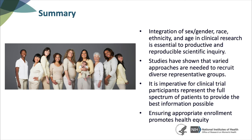The purpose of clinical research is to understand how the human body works and to apply that knowledge to improve health outcomes for everyone. For clinical research to be truly useful, it must reflect the populations affected by the diseases it intends to help. Given important biological differences by age and sex, and other differences by race and ethnicity, it's important to integrate inclusion as a guiding principle for productive science. Integration of sex and gender, race, ethnicity, and age in clinical research is essential to productive, generalizable, and reproducible scientific inquiry. Studies have shown that varied approaches are needed to recruit diverse populations, and it is imperative for clinical trial participants to represent the full spectrum of individuals affected by diseases. Ensuring appropriate enrollment in clinical research promotes health equity.